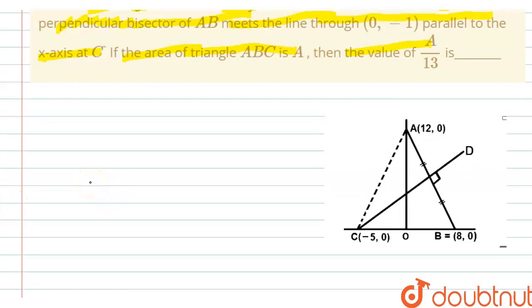Now let us proceed step by step. We are given that line 3x plus 2y equal to 24 meets x-axis at point B, that is (8, 0), and y-axis at point (0, 12) that is point A.